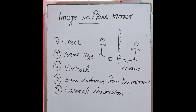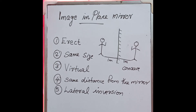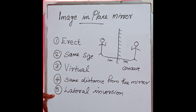We know that in an ambulance, the word 'AMBULANCE' is written reversed on the front. Why? Because of lateral inversion in mirrors. When a driver looks through the side-view mirror, they can correctly read it as 'AMBULANCE.' If it were written normally, the mirror would show an inverted image. So, to avoid that, the name on the ambulance is written upside down. These are the characteristics of the image formed in a plane mirror.